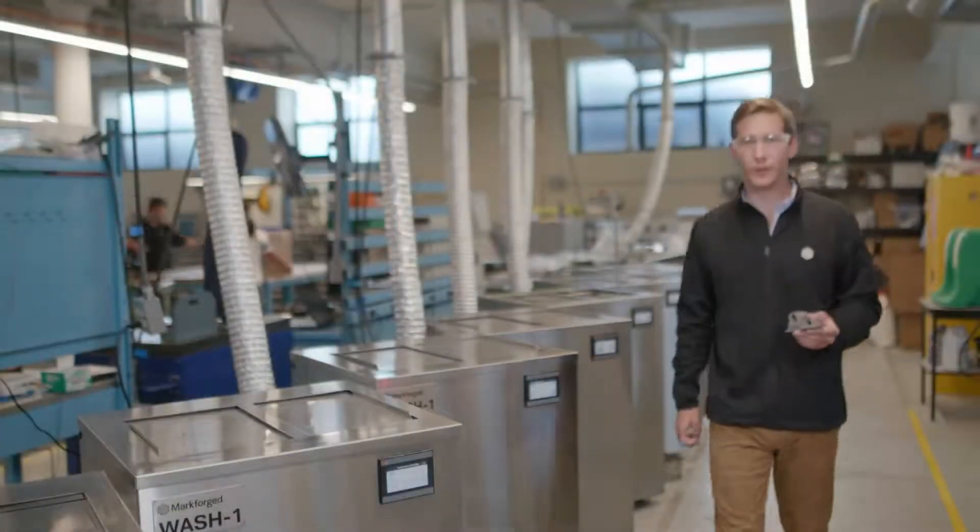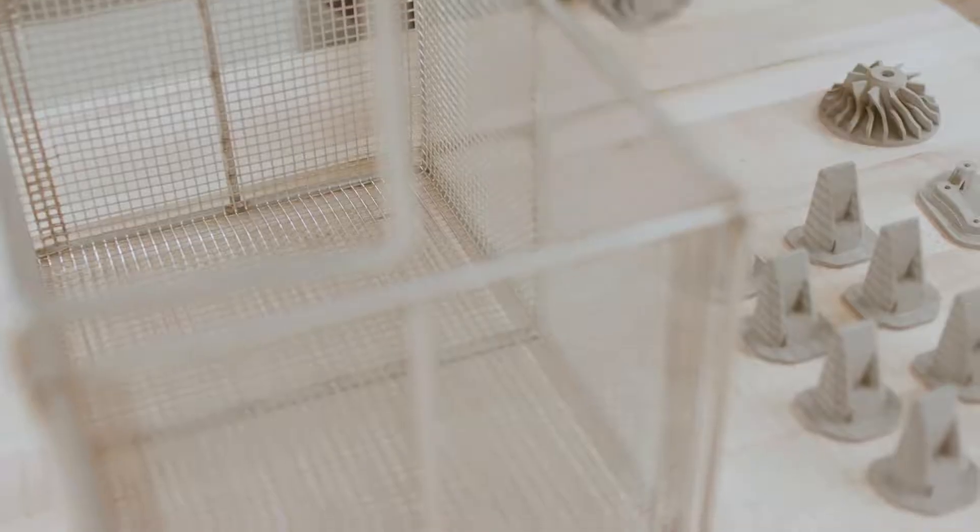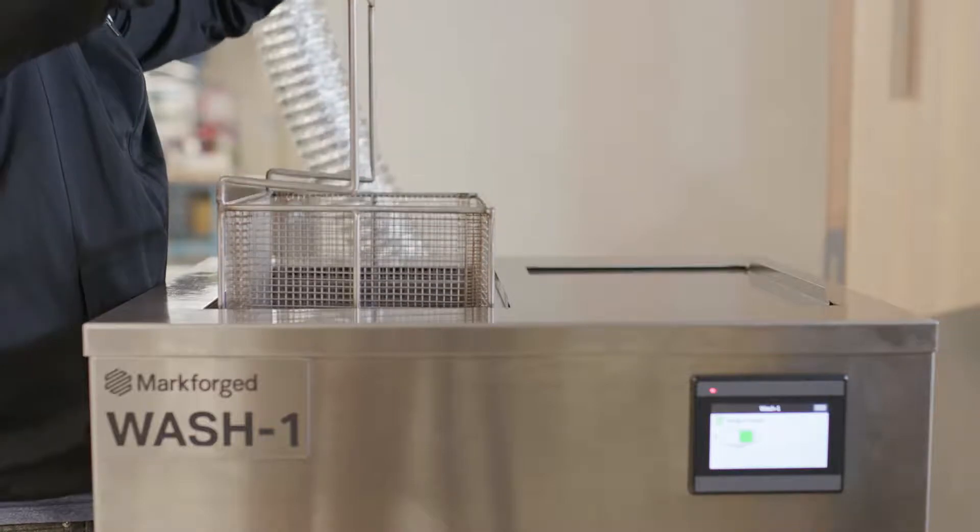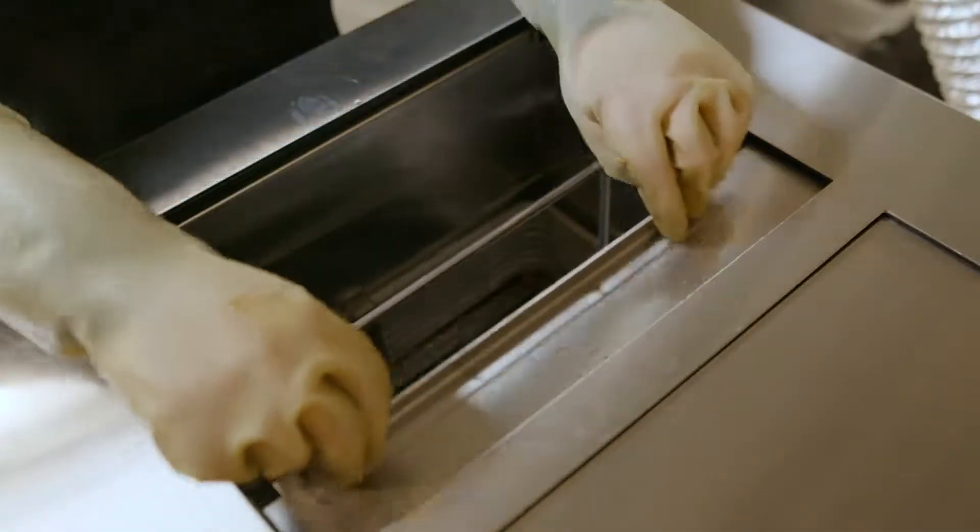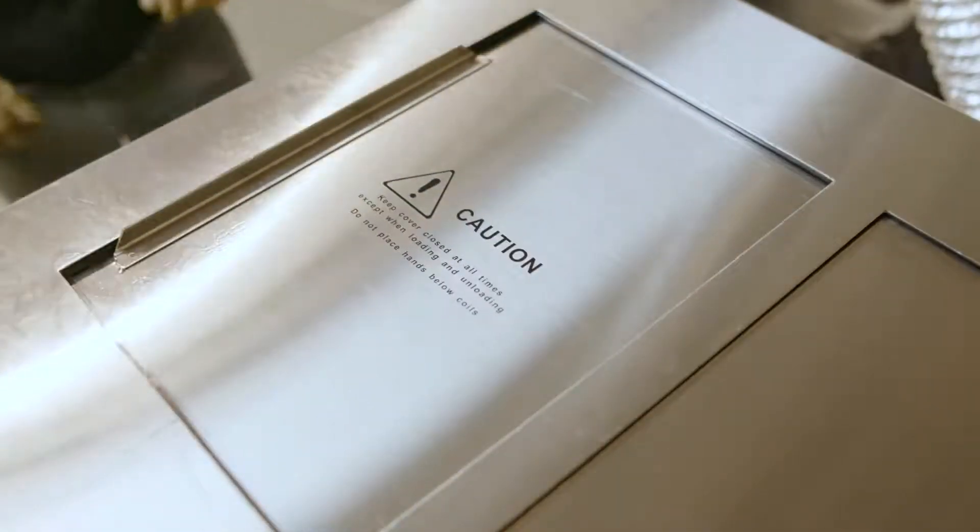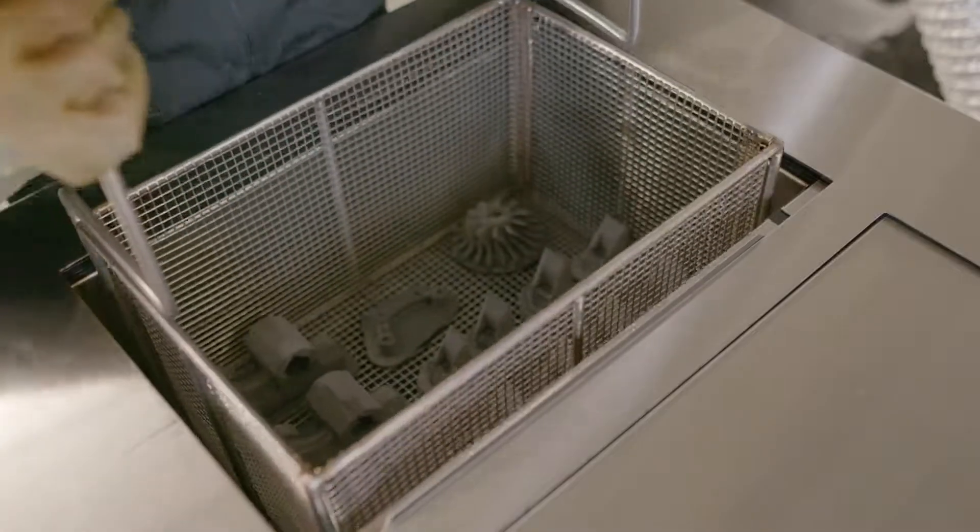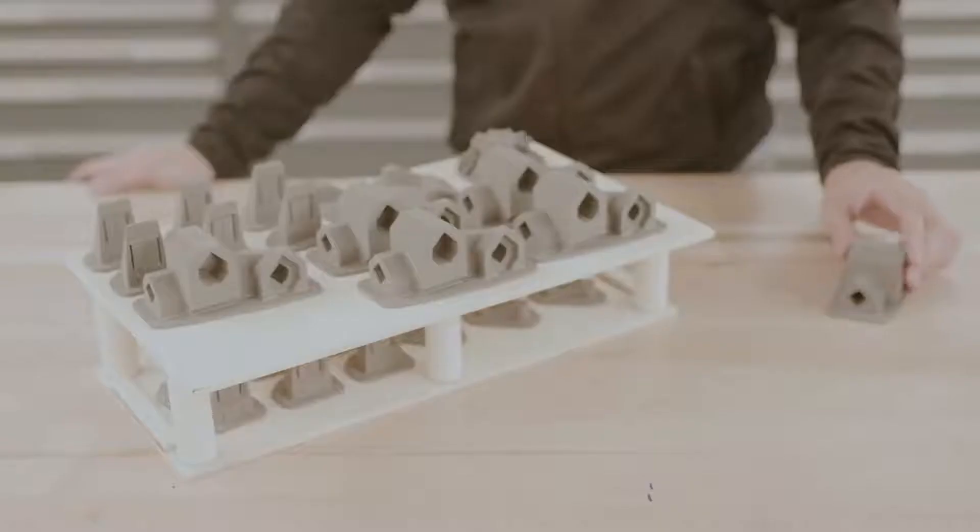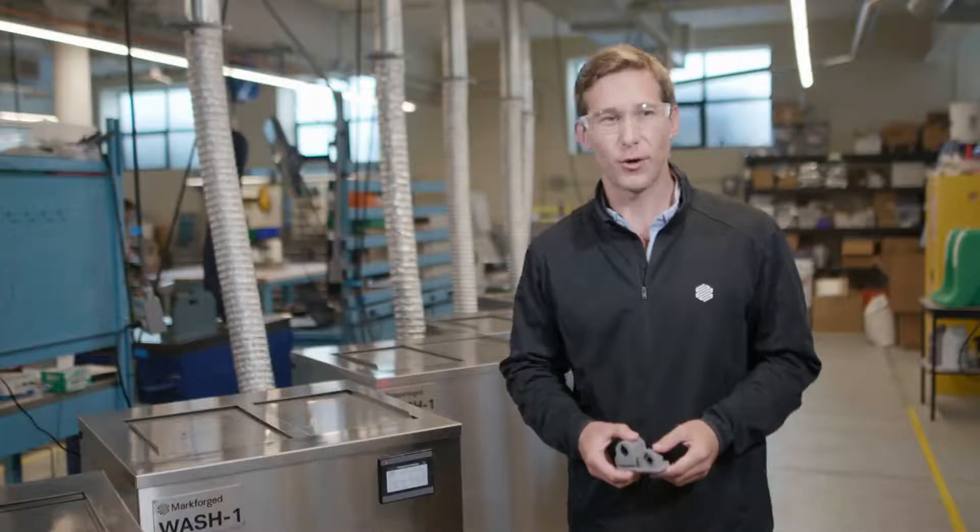The wash one removes the first stage of the binding material. A green part is taken from the printer and placed into the wash basket, which is then lowered into the solvent. Wash times will vary, ranging from a few hours to a few days, depending on the thickest region of your part. After that, it's now called a brown part and is ready for sintering. Let's go over to the furnaces.